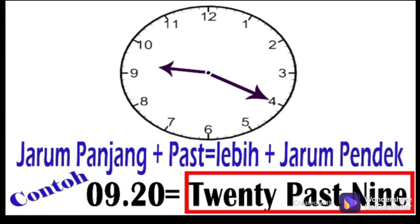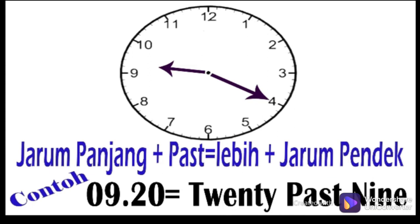Mungkin kalian merasa aneh, kok '20 past 9' diartikan pukul 9 lebih 20 menit? Padahal, kalian melihat susunan kata dari kiri ke kanan, sepertinya diartikan pukul 20 lebih 9 menit. Ya, dalam bahasa Indonesia, menyebut jam memang jarum pendek dulu, kemudian jarum panjang, dari kiri ke kanan. Sedangkan dalam bahasa Inggris, ada ketentuan menjadi dibalik.